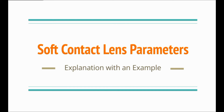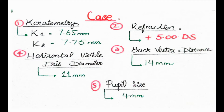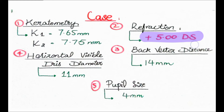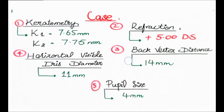For your convenience, I have made an example where a patient comes to you and you have done the refraction. You obtain that the patient has a spherical correction of about plus 5 diopters sphere, which means the patient is hypermetropic. During refraction, back vertex distance is also considered - it is the distance from the back surface of the lens to the front surface of the cornea. In this case, the back vertex distance is 14 millimeters.